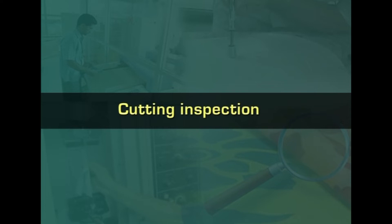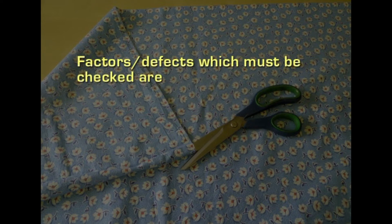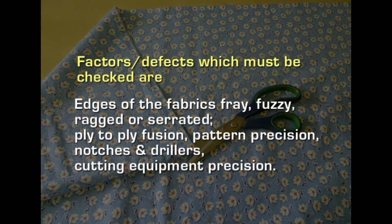Cutting inspection is also important because patterns have to be cut with precision to ensure the garment fits properly. Factors or defects which must be checked include: frayed, fuzzy, ragged, or serrated fabric edges; ply-to-ply fusion; pattern precision; notches and drill marks; and cutting equipment precision. Cutting quality is a prerequisite for quality in a finished product. Cut work quality also affects the ease and cost with which construction is accomplished.